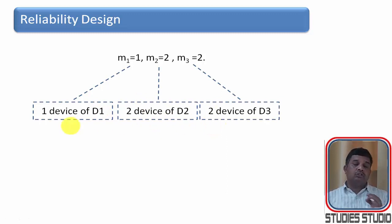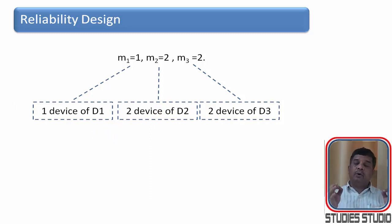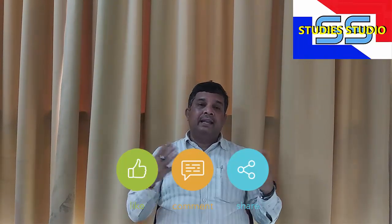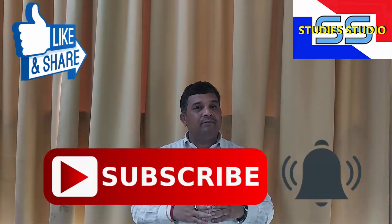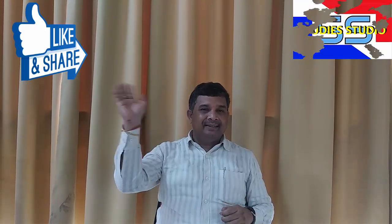Within a cost of 100, this configuration gives enhanced reliability of 0.648. This is how we solve the reliability design problem using dynamic programming. If you understood, please give a like and share among your friends. In our next video we will talk about yet another application of dynamic programming. See you then — take care, bye.